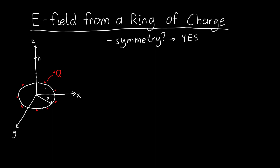Because this is a ring, it's symmetric about x and symmetric about y. So if I have a little bit of charge here — I'll call this dq — it generates an electric field pointing in a certain direction with an x component and a z component. But every single point on the ring has an opposite point whose electric field exactly cancels the x components, while the z components add together. This same argument applies all around the ring, so the x and y components cancel and we're only left with the z component of the electric field.